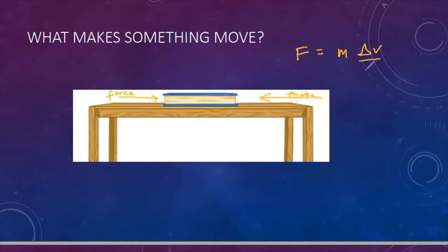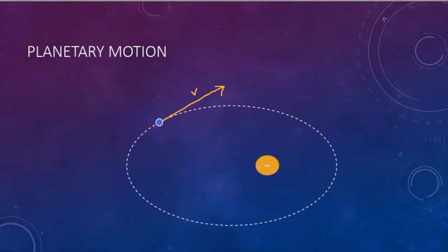So let's take a look at this. Suppose an object, a planet, has some velocity at some point. If there is no other object interacting with the planet, the planet will just keep moving with constant speed.